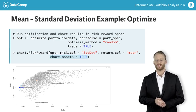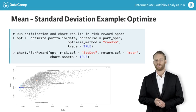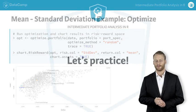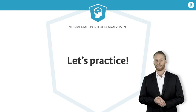You can see this in the chart in the slide, where the gray points are the objective values of a given iteration. Collectively, these portfolios form the feasible space — the set of portfolios that satisfy the specified constraints.